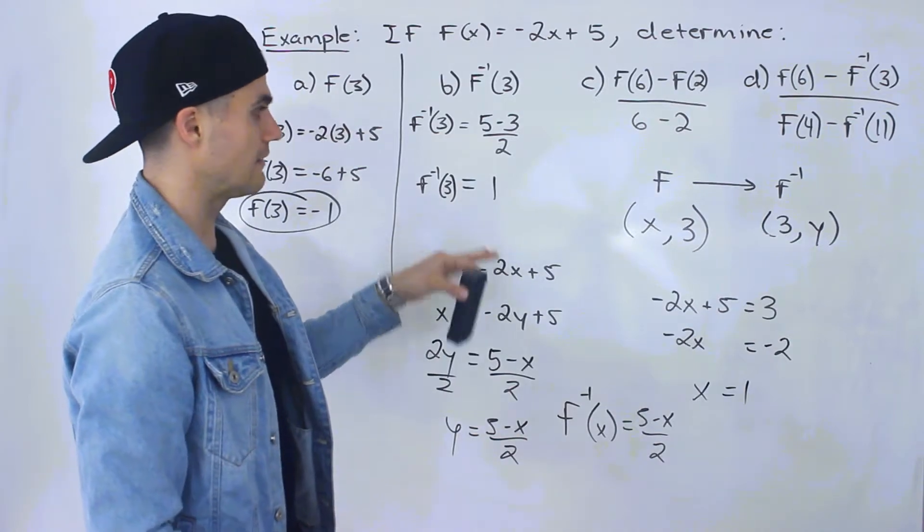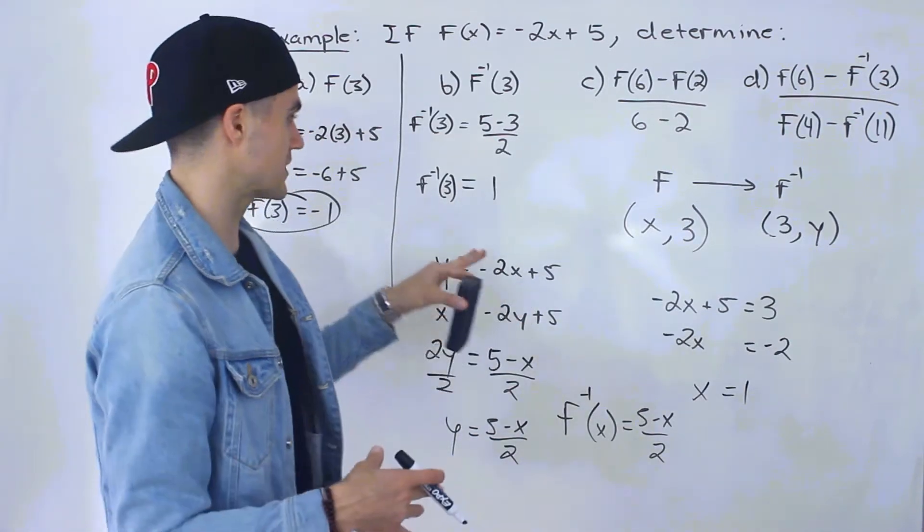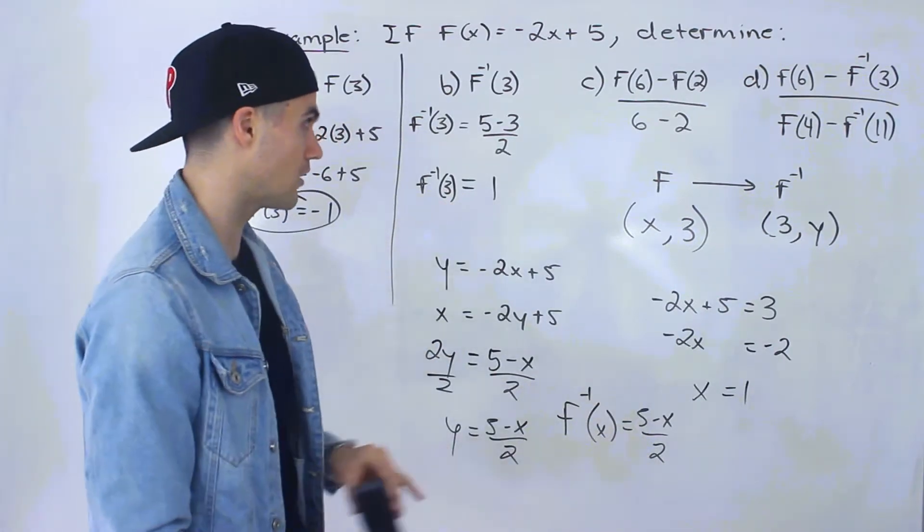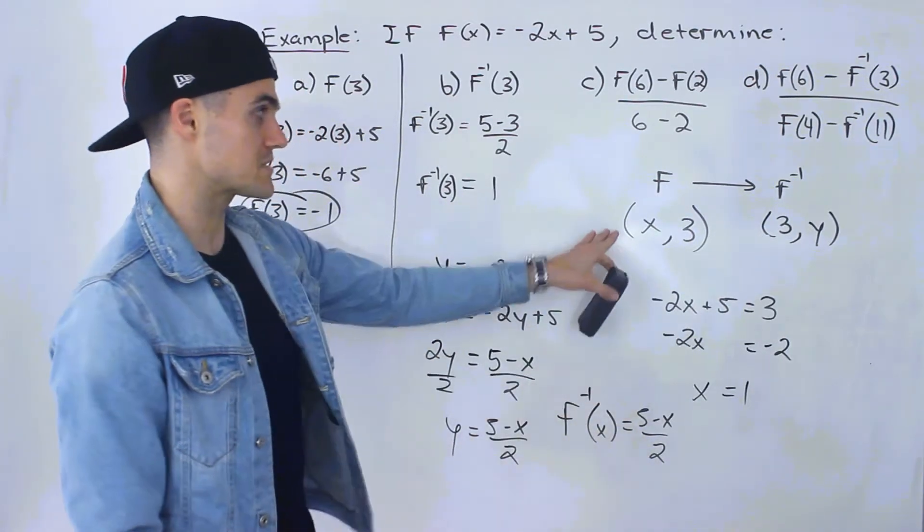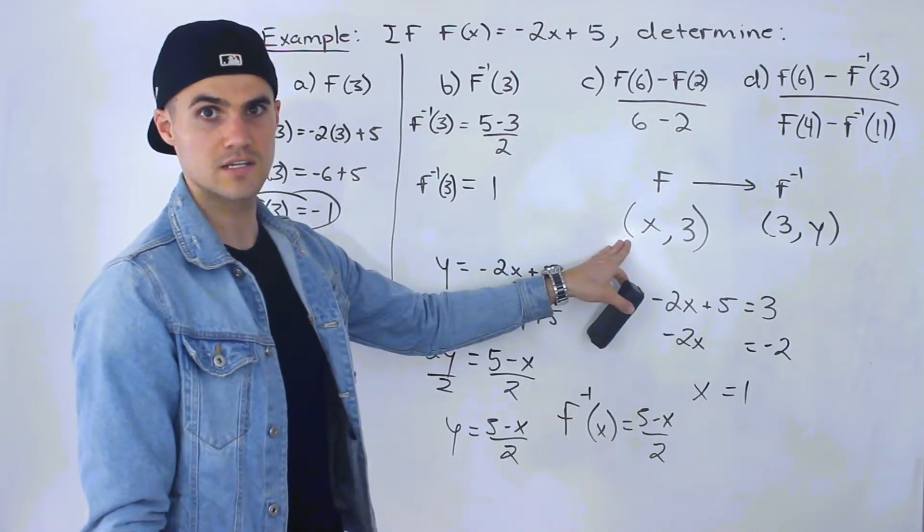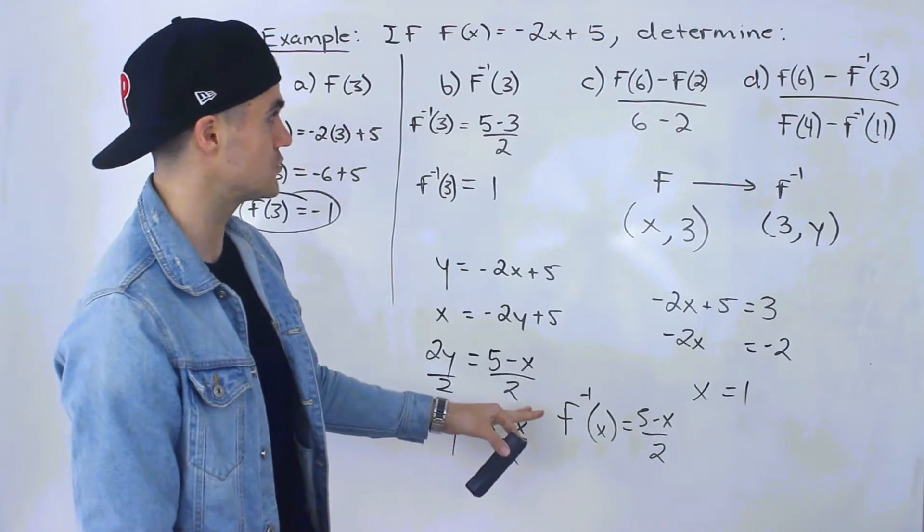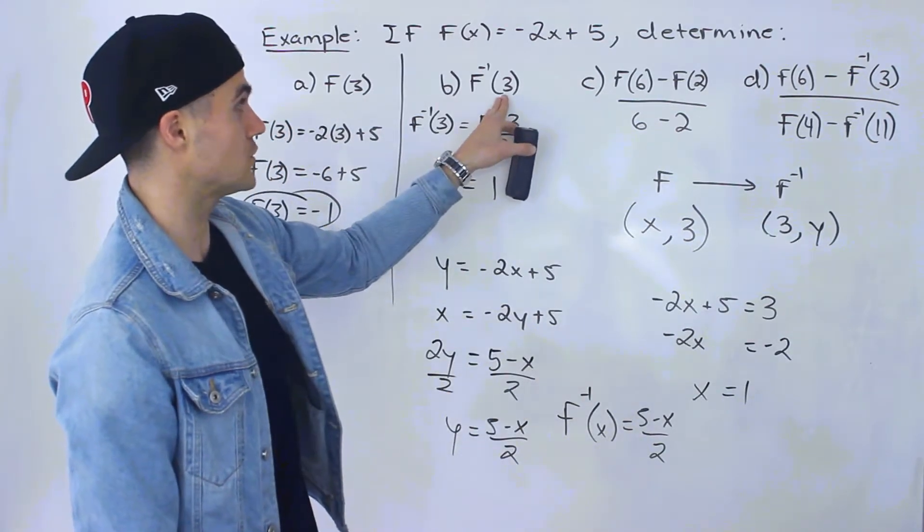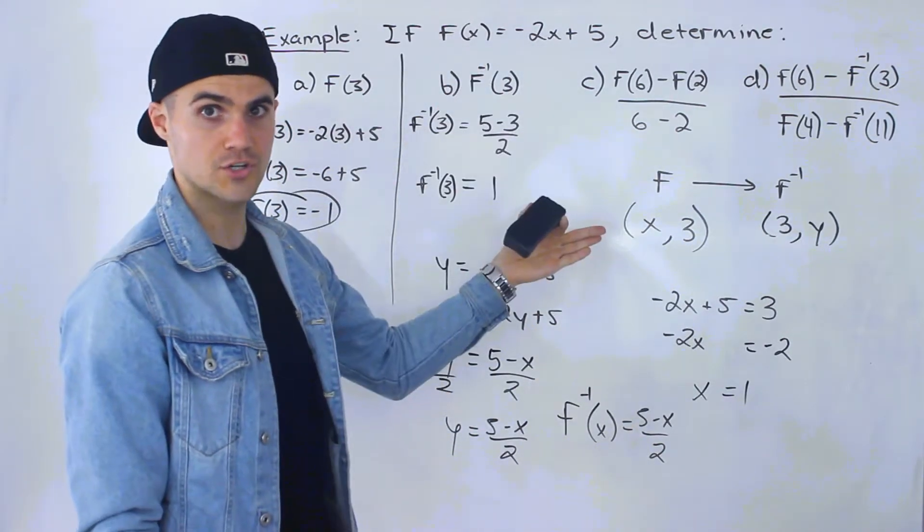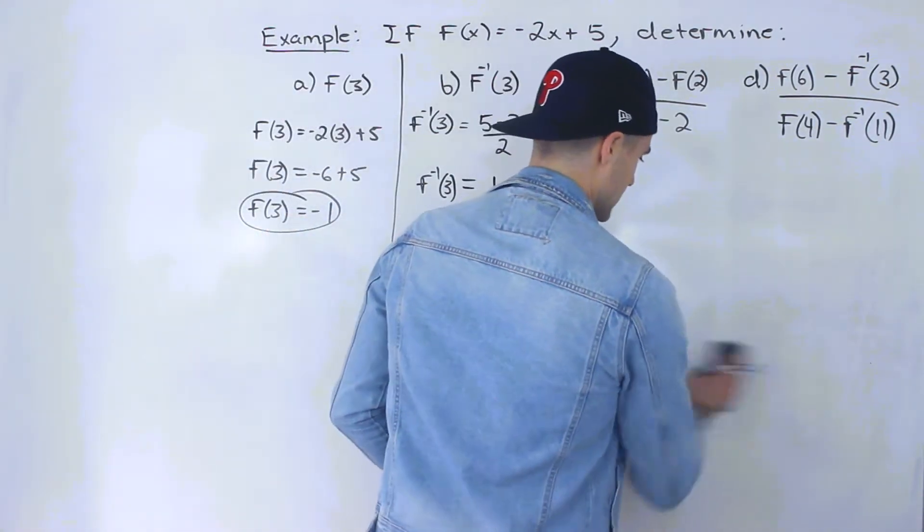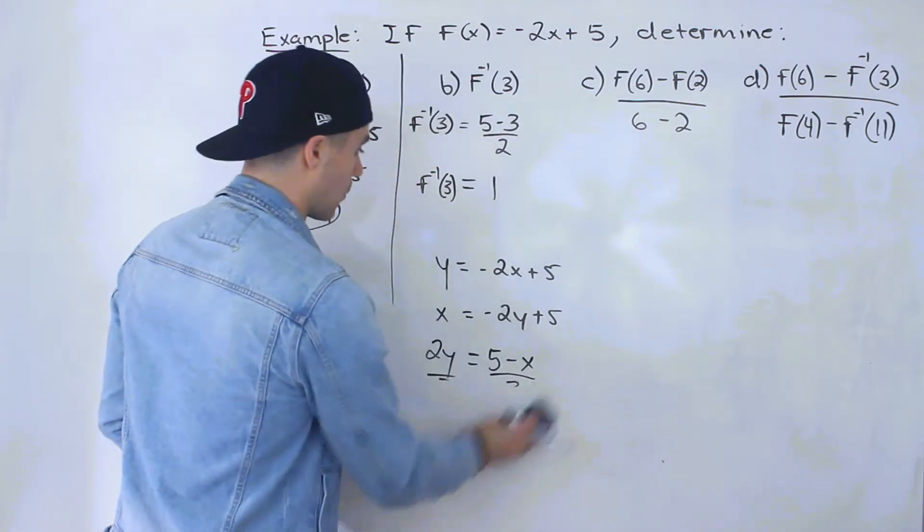Personally, unless the function is really complex, I usually like to get an expression first and then plug it in. Sometimes it takes a little bit longer, but this method is really useful. We'll see this in future examples where we don't have to necessarily get an expression. All we have to do is plug this value into the y value of the function and then solve for x. But either way, the answer to part b is 1.